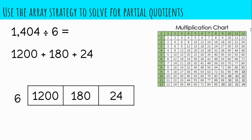6 goes into 1,200, 200 times. 6 goes into 180, 30 times. And 6 times what is 24? 4.